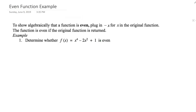Now let's look at how to show algebraically that a function is even. Plug in negative x for x into the original function. The function is even if the original function is returned. In this case, the original function is f of x equals x to the fourth power minus 2x squared plus 1, so we replace x with negative x.